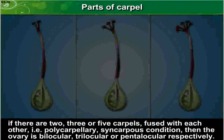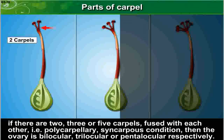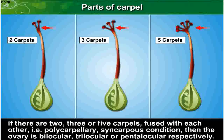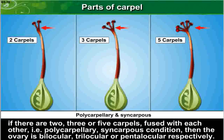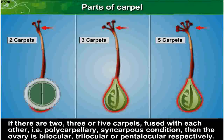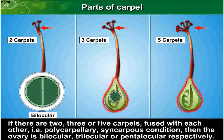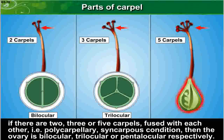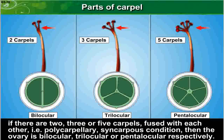If there are two, three, or five carpels fused with each other — i.e., a polycarpellary syncarpus condition — then the ovary is bilocular, trilocular, or pentalocular respectively.